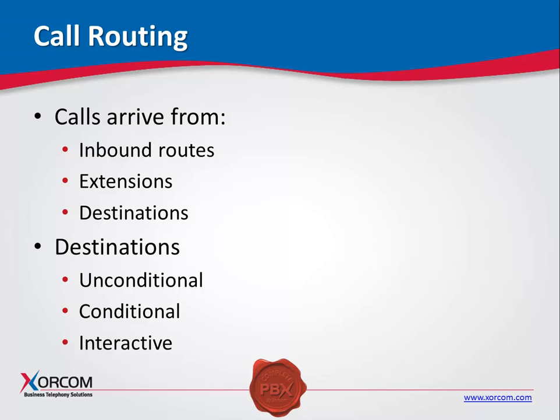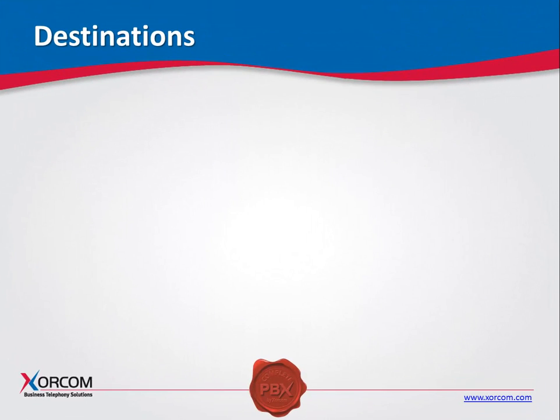Destinations are one of three types. Unconditional, where you have no control whatsoever about how the call gets to a destination. Conditional, where you have some control over how the call reaches a specific destination. Interactive, where the caller can determine the destination in real time, such as when using an IVR, also known as auto-attendant. Now let's look at the different types of destinations that can be defined in CompletePBX.